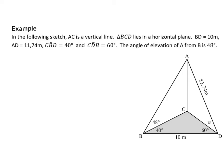Let's have a look at an example. In the following sketch, AC is a vertical line, and triangle BCD is in a horizontal plane.